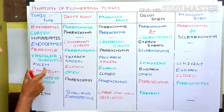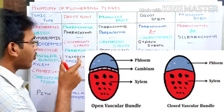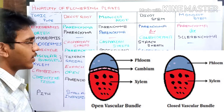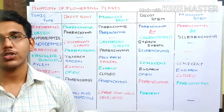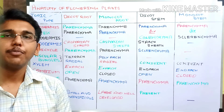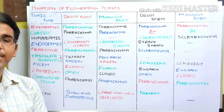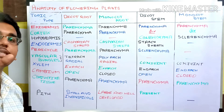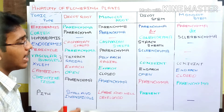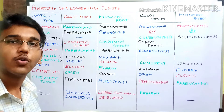Dicot root and dicot stem have open vascular bundles, and monocot root and monocot stem have closed vascular bundles. Open means the plant body is open for secondary growth, and closed means it cannot undergo secondary growth. Cambium presence is essential for secondary growth — if cambium is present in the vascular bundle it is open, and if absent it is closed.